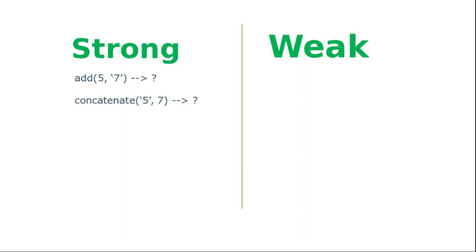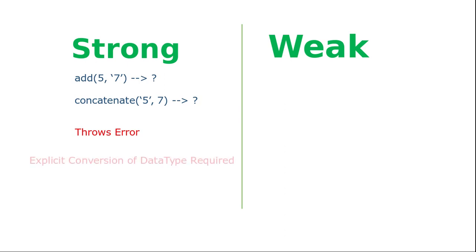In strong typing, suppose we supply 5 as an integer but 7 as a string to the add function, and in the concatenation function we supply 5 as a string but 7 as an integer. In this case, a strong typing programming language will immediately throw an error because of the data type mismatch.